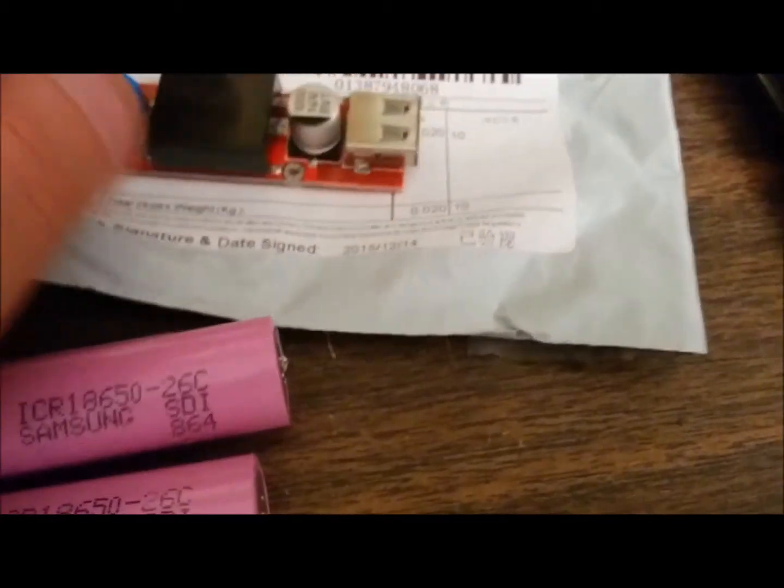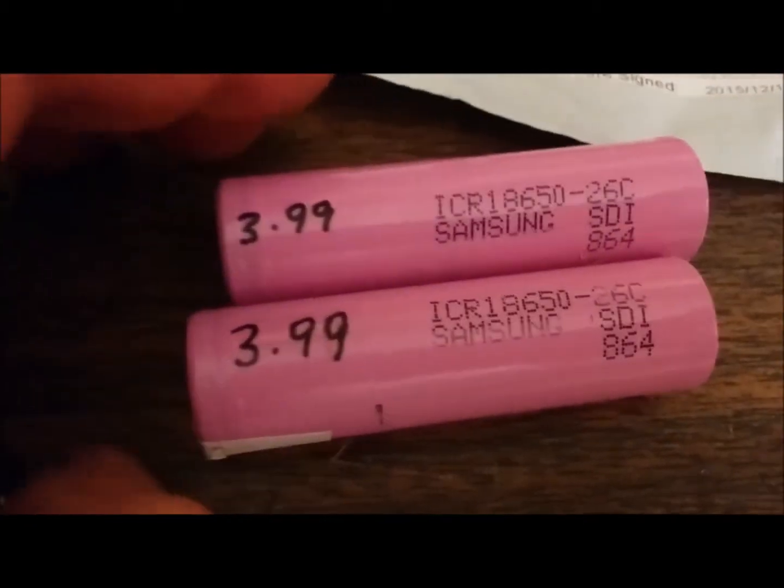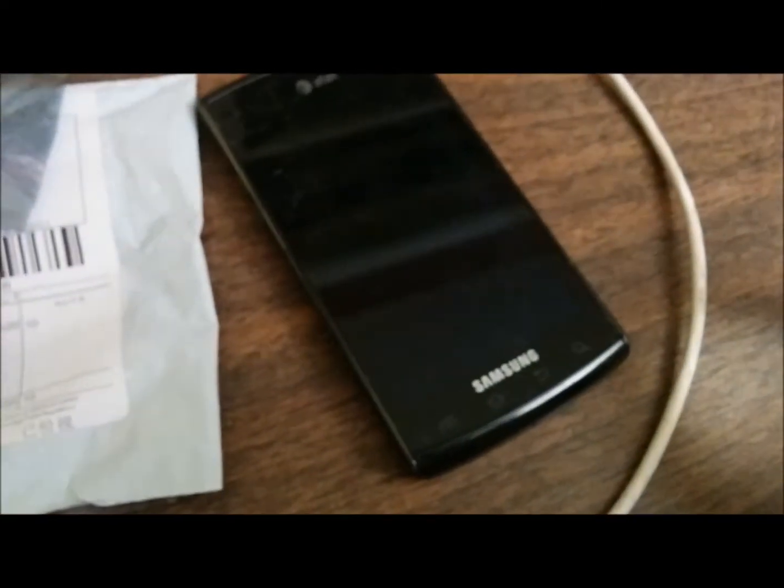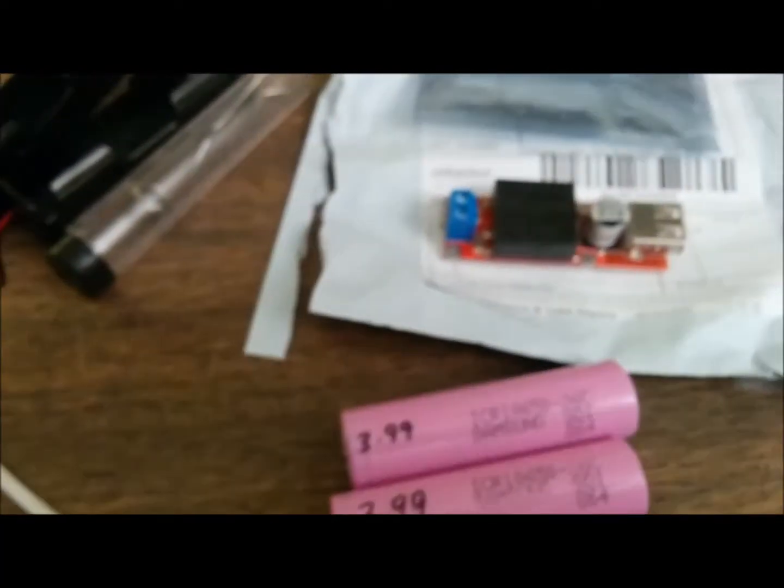I got this USB charger on eBay for seven to eight volts. I'm going to be using these two 18650 batteries, a little bit of solder, two battery cases, and this phone. I was going to use a soldering iron to connect everything, but I don't think I'll even need it.